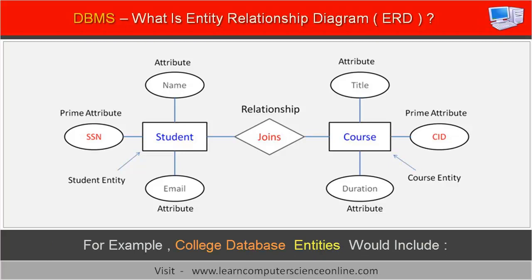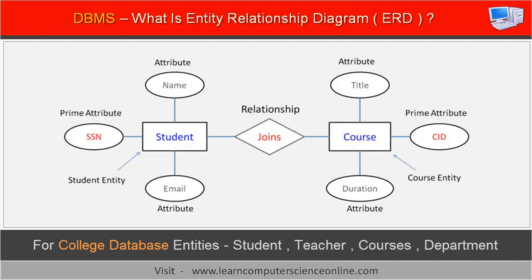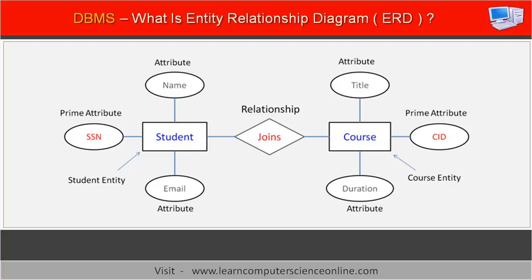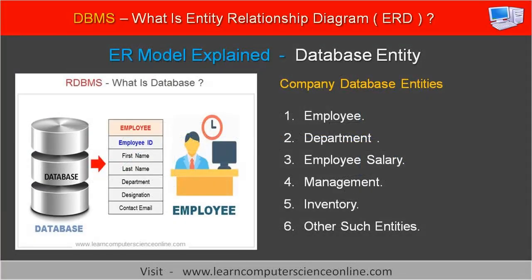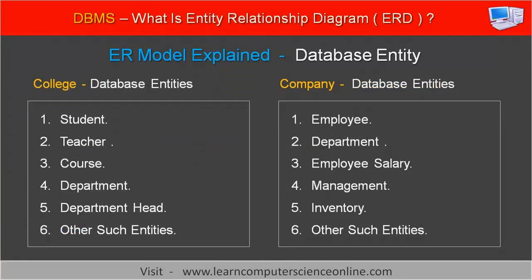For example, if we are designing a database for a college, then the entities that need to be represented in the college database would include: student, teacher, courses, departments, department heads, and other similar entities. Similarly, if we are designing a database for a company, then the entities would include: employee, department, employee salary, management, inventory, and other similar entities. In these examples, some entities have physical existence whereas some entities are merely business concepts.